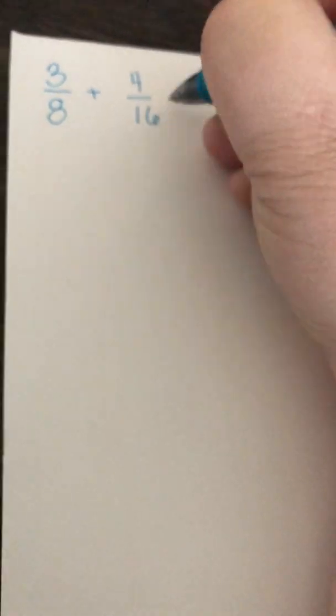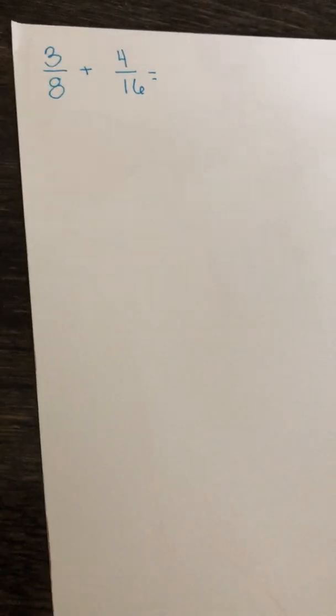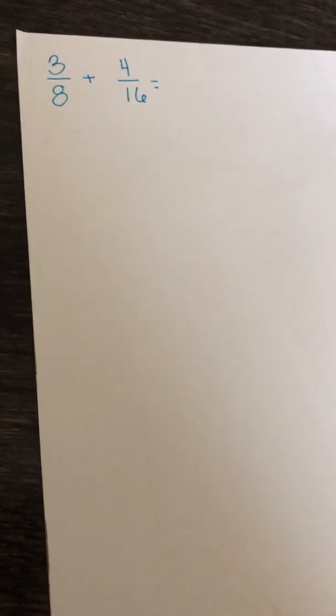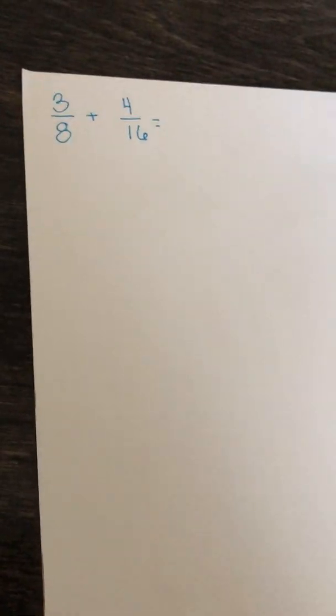Now let's do one more. Let's do 3 eighths plus 4 sixteenths — I really want to know what that is. Again, that first step is to look at the problem. I notice that the denominators are not the same.